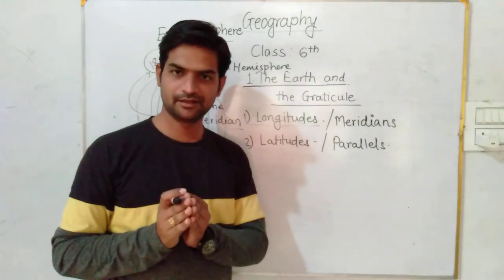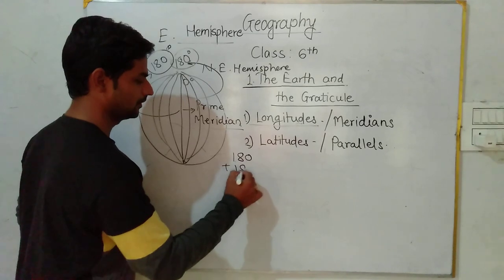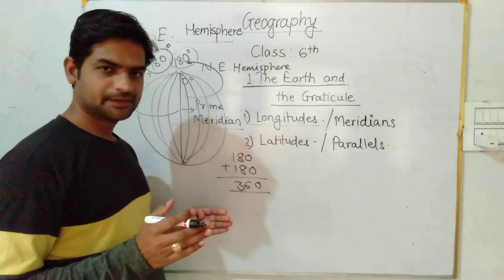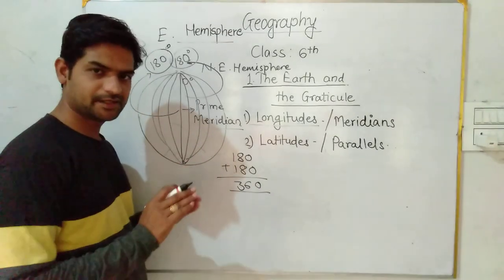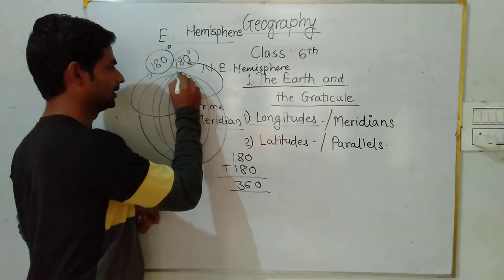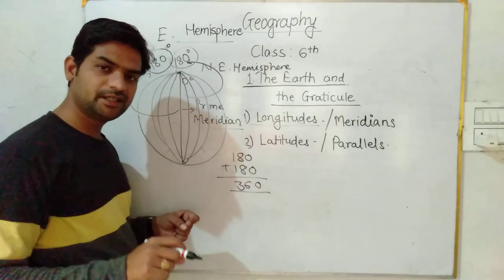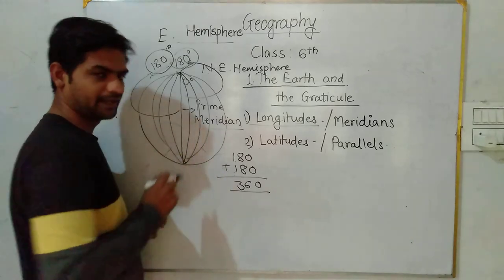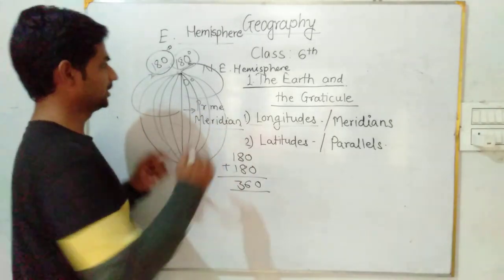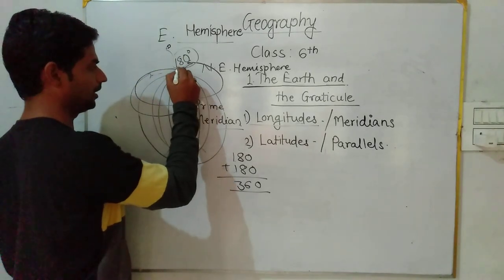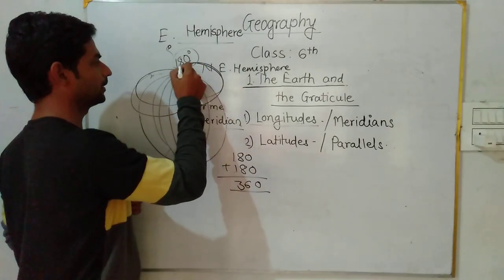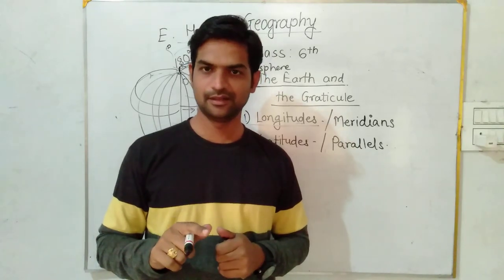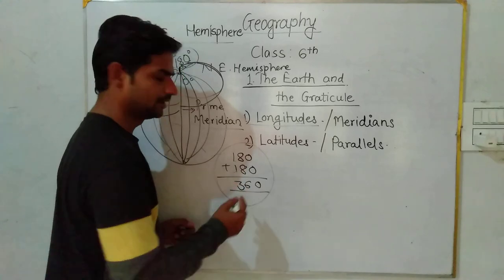The total number of meridians is 180 plus 180 equals 360. You know that the degrees of a circle is 360 degrees. Like that, on our earth there are 360 longitudes. This 180 and this 180 meridian is the same meridian — these are not two different meridians. From one side we are counting, that line is the same line from the other side. So at 180 degrees there are no two meridians — that is a single meridian. That is why the number of meridians is 360, not 361.